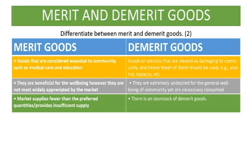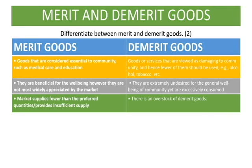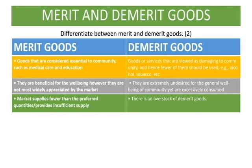The market supplies fewer than the preferred quantities — in other words, it provides an insufficient supply of merit goods. But when it comes to demerit goods, there is an overstock; there is an oversupply of demerit goods.